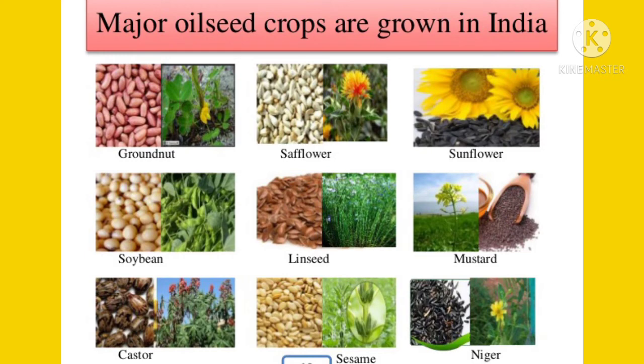The second important commercial crop is rubber. Rubber is the sticky, juicy latex obtained from rubber trees in equatorial forests. Leading producers of rubber in the world are Thailand, Malaysia, Indonesia, India, Sri Lanka, Nigeria, Brazil, and others. In India, the Kanyakumari district of Tamil Nadu and Kerala are the most important rubber-producing regions.